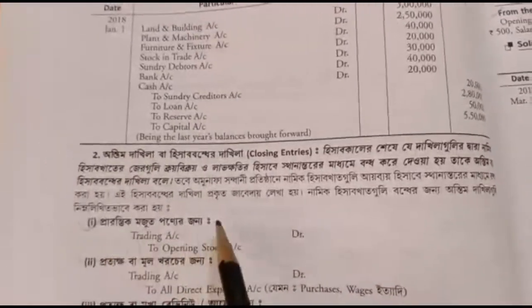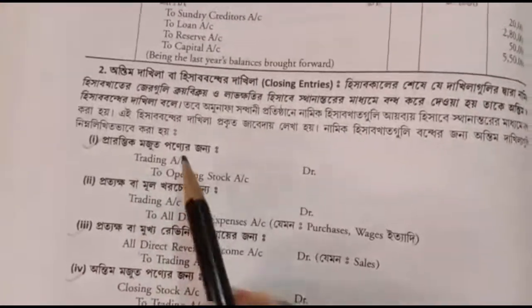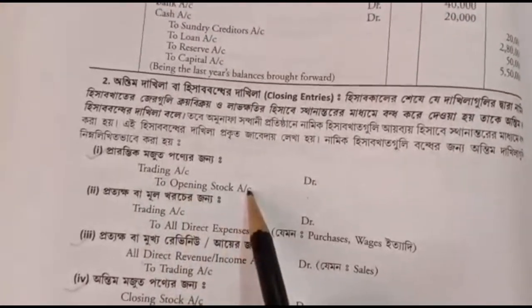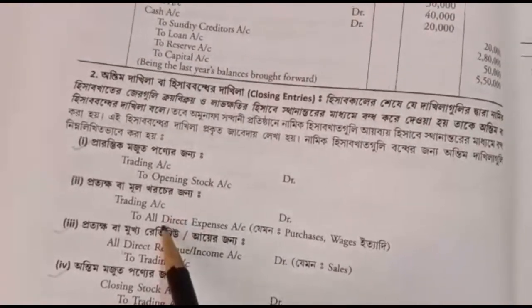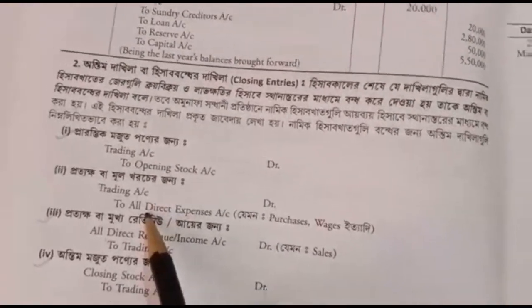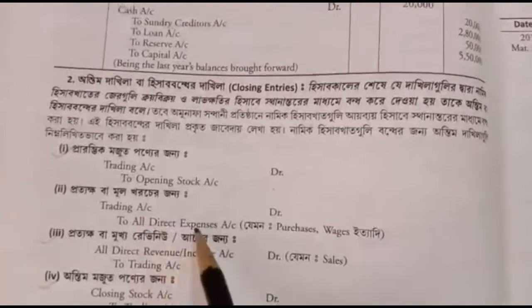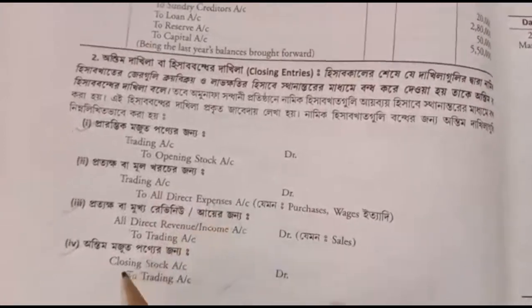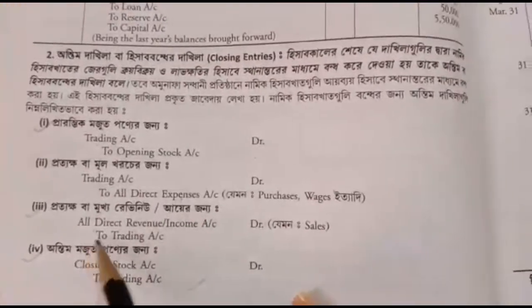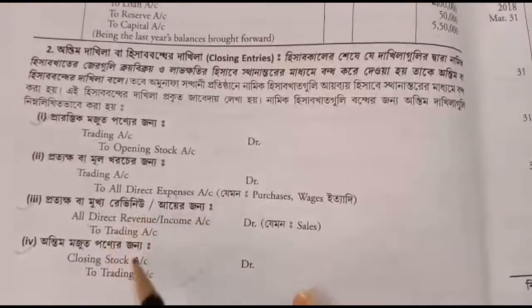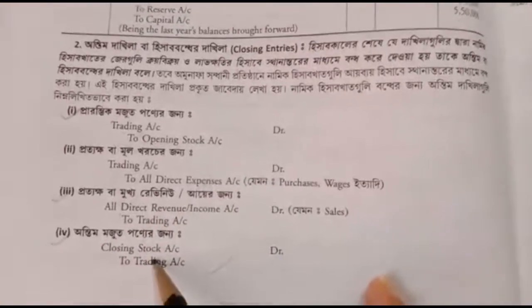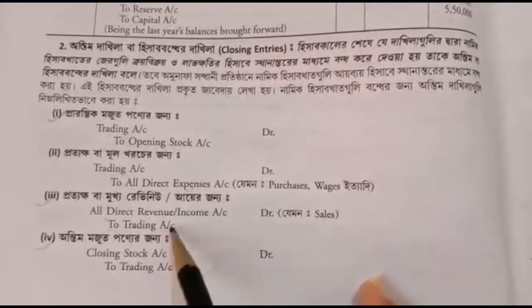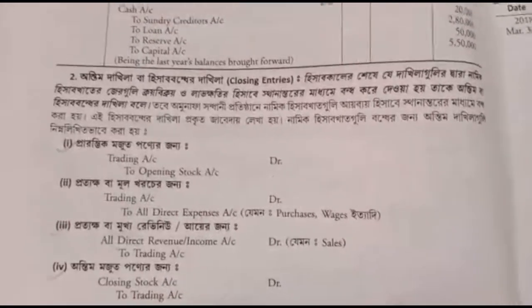We have to find the trading account and opening stock account. Trading account is debited with opening stock — this is the closing entry. You also find wages, purchases, and direct expenses: all direct expenses are transferred to the trading account. Direct income is transferred to trading, for example sales. You also close the closing stock to trading account. This is the closing entry.